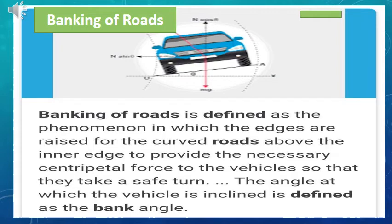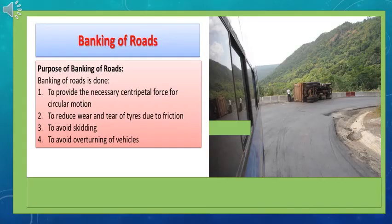The angle at which the vehicle is inclined on a banked road is defined as the bank angle. Banking of roads is done to provide the necessary centripetal force for circular motion, to reduce wear and tear of tyres due to friction, to avoid skidding, and to avoid overturning of vehicles.